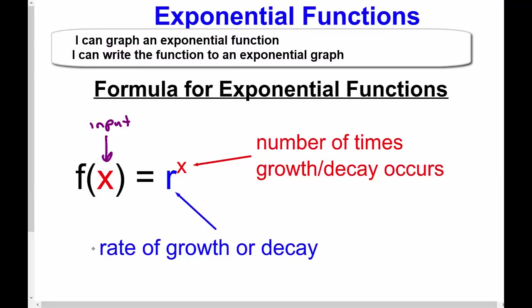The rate of growth or decay is the base of our exponent, and x — the exponent itself — is the number of times that the growth or decay occurs. An example from the last video was bacteria: the rate of growth was doubling, so r = 2, and the number of times it grows depended on hours passed — say, 24 hours means it doubled 24 times. That's our formula for exponential functions, very helpful for word problems.